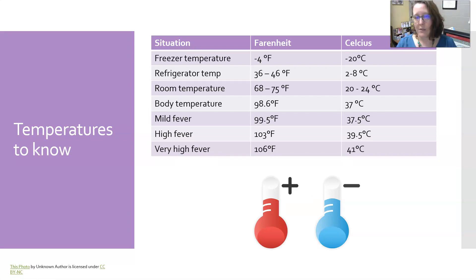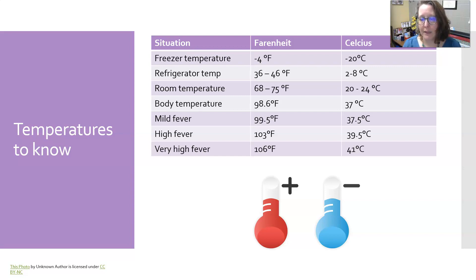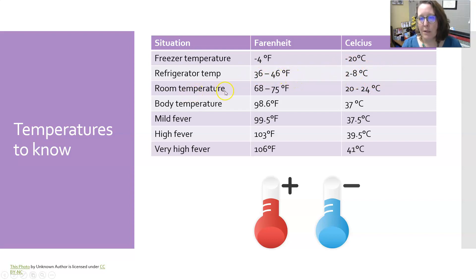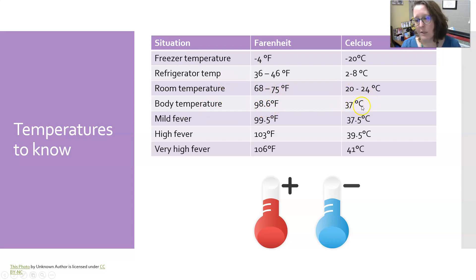One way to handle temperature conversions is to memorize the key ones used in healthcare and the lab. A freezer is kept at negative 20°C (about negative 4°F). A refrigerator is 2 to 8°C (36 to 46°F). Room temperature is 20 to 24°C (68 to 75°F). Body temperature is 98.6°F, equivalent to 37°C.